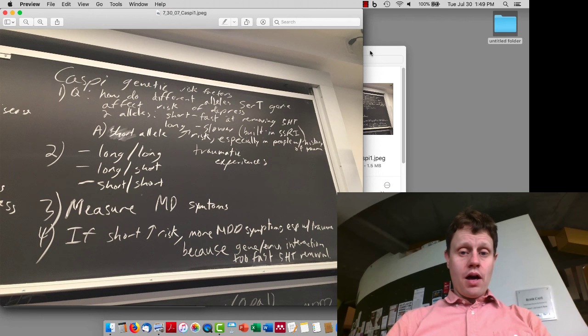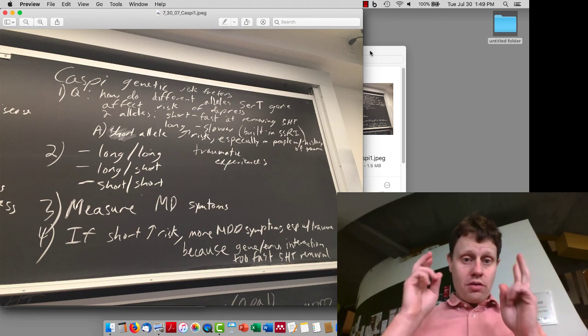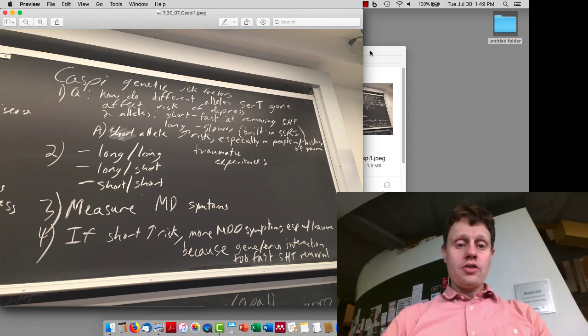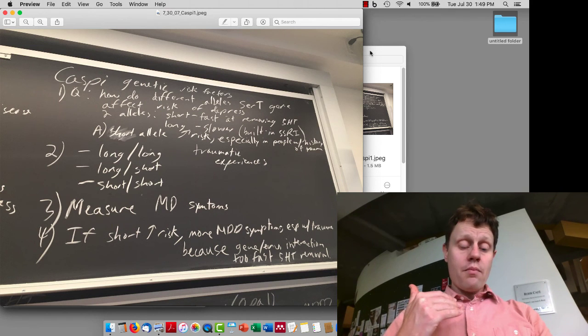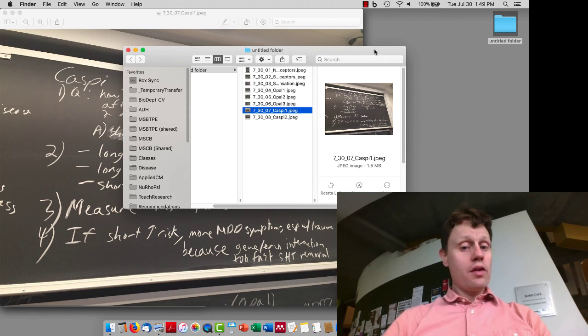Interestingly, there's actually some indications here and in other studies that the short alleles, which are the risk alleles for depression, can actually also lead to better outcomes than the long alleles in people with low-stress environments.